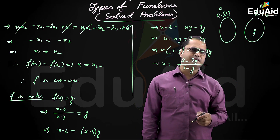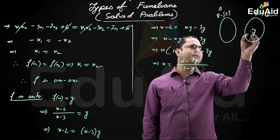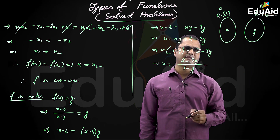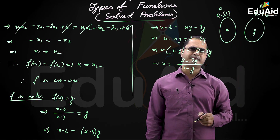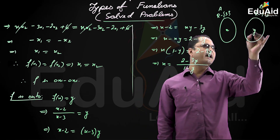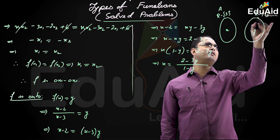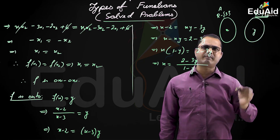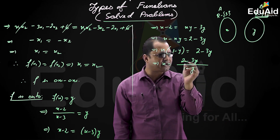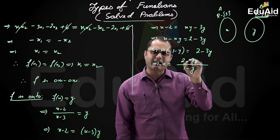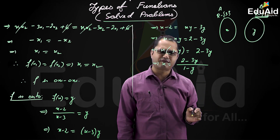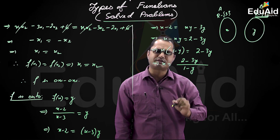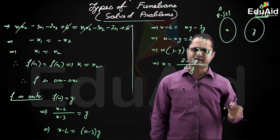If y belongs to B, then against that y we have to get some x here such that x's image will be y. For y to belong to B, y should be a real number except 1. Fortunately, when we take any y that is a real number and y is not equal to 1, the denominator (1 minus y) will not be zero, because 1 is excluded from B.